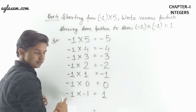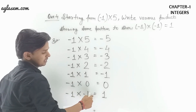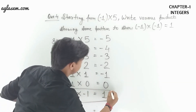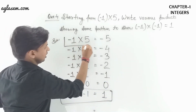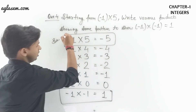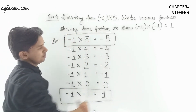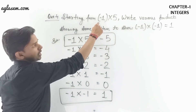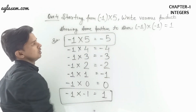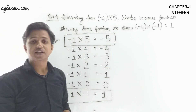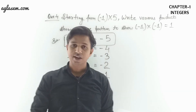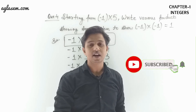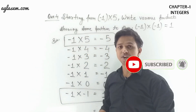After this, (-1) × (-1) = 1. This was the pattern: starting from (-1) × 5 and continuing to (-1) × (-1) = 1. These were the solutions for question number 4 from Exercise 1.3. For more exercises and videos related to NCERT, subscribe to our channel and hit the like button if you liked the video. Till then, bye!